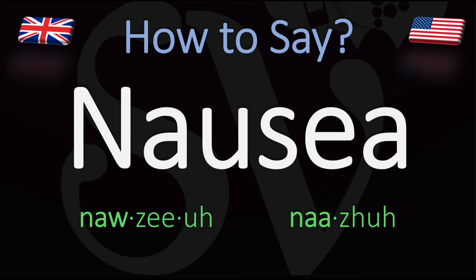In British English it is usually said as 'nausea', stressing on the first syllable. In American English however it is usually said as 'nausea', stressing on the first syllable as well. So: 'nausea' in British English or 'nausea' in American English.